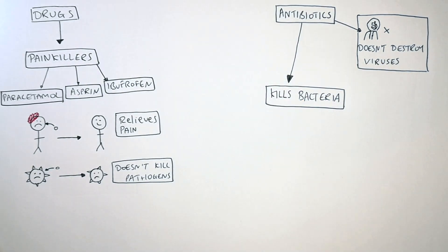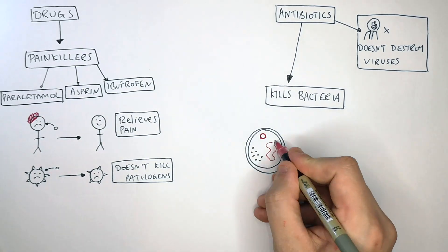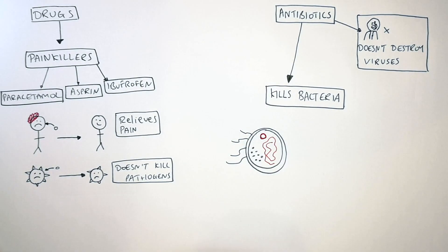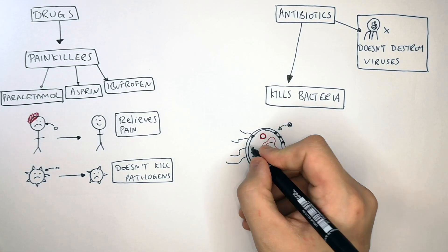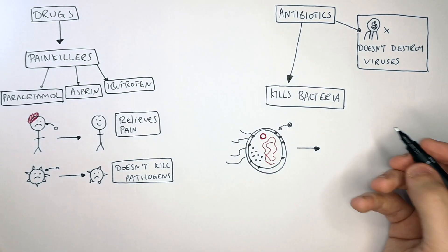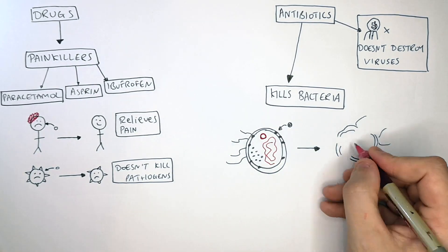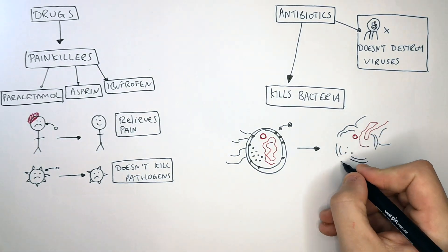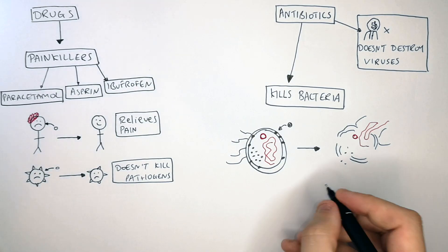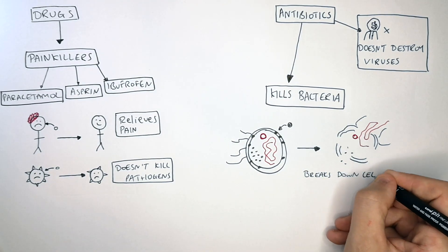Here are two examples of how antibiotics kill bacteria. Firstly, the antibiotic can bind onto the cell wall of a bacteria and kill the bacteria by breaking down the cell wall.